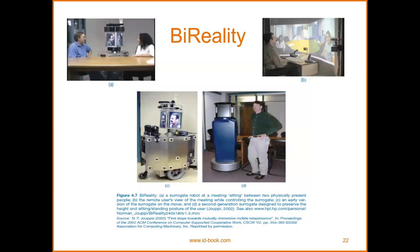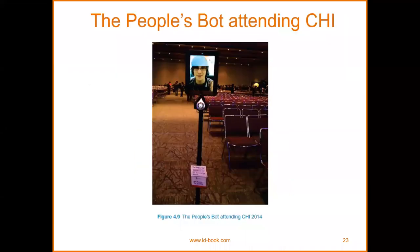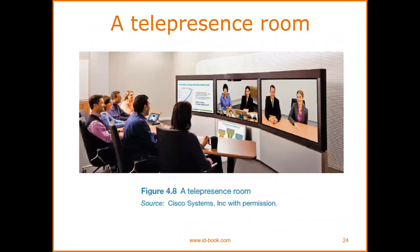We have B-reality as well — hologram technologies invented around 2016. A surrogate robot at a meeting seated between two physically present people. Then we have people's avatars attending CHI. Telepresence rooms, Cisco systems information — even in high industries. How much realism is needed in telepresence to make it compelling?